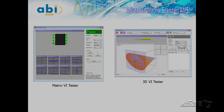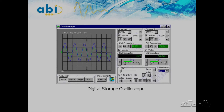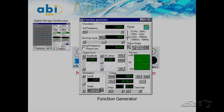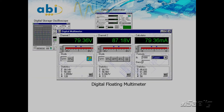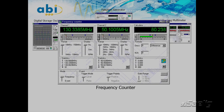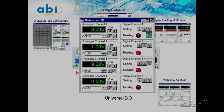The fifth module is the Multiple Instrument Station. The MIS provides eight high-specification test and measurement instruments in one compact module. It offers a two-channel 100 MHz digital storage oscilloscope, 10 MHz function generator, dual-channel digital floating multimeter, 100 MHz frequency counter, universal I/O for acquisition and generation of signals, and auxiliary power supply.